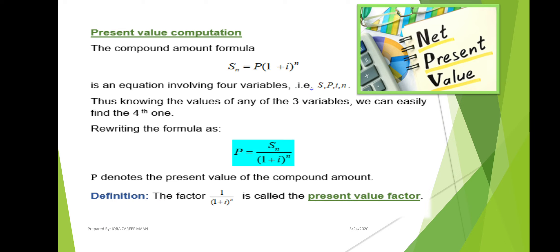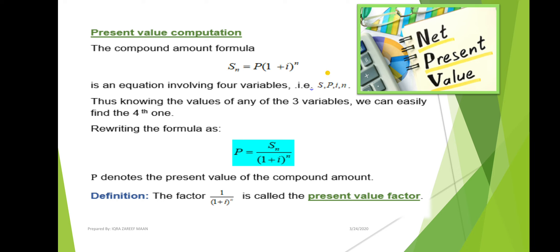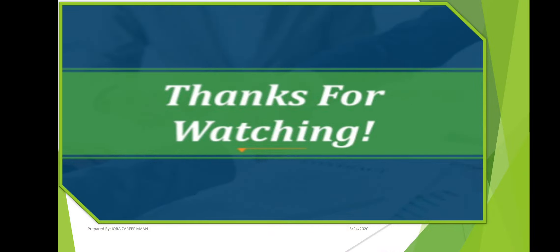Present value computation: the formula for compound interest depends on four terms — S, P, i, and n. Knowing any three variables allows us to find the fourth. Rewriting the formula as P equals S divided by (1+i) raised to the power n, P denotes the present value of the compound amount. The factor one over (1+i)ⁿ is called the present value factor. Thanks for watching — hopefully this helps you understand the concept of simple and compound interest.